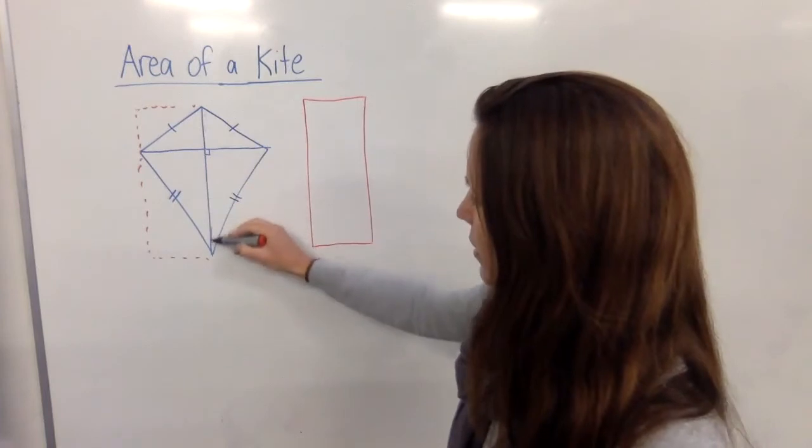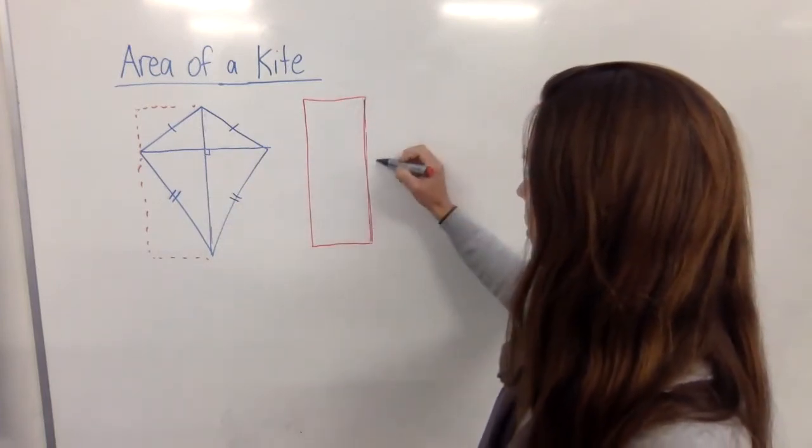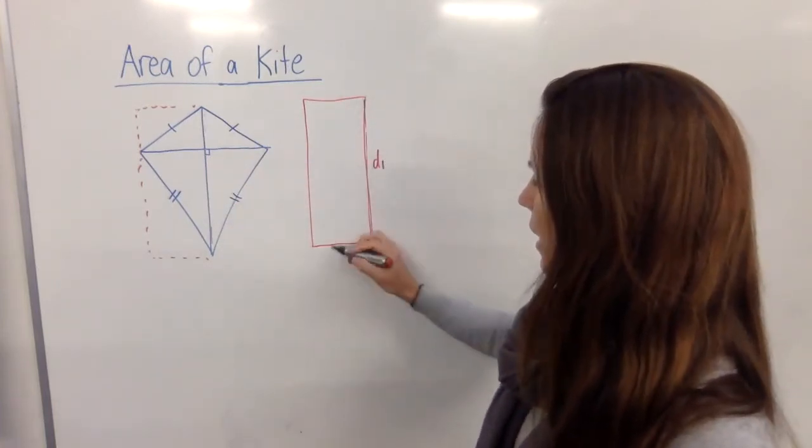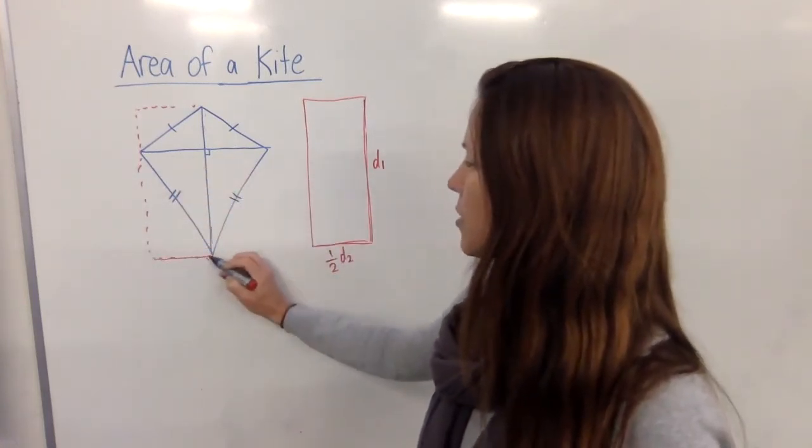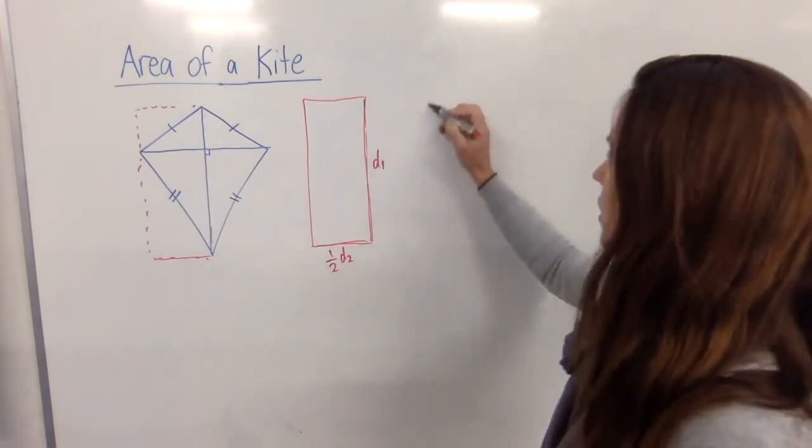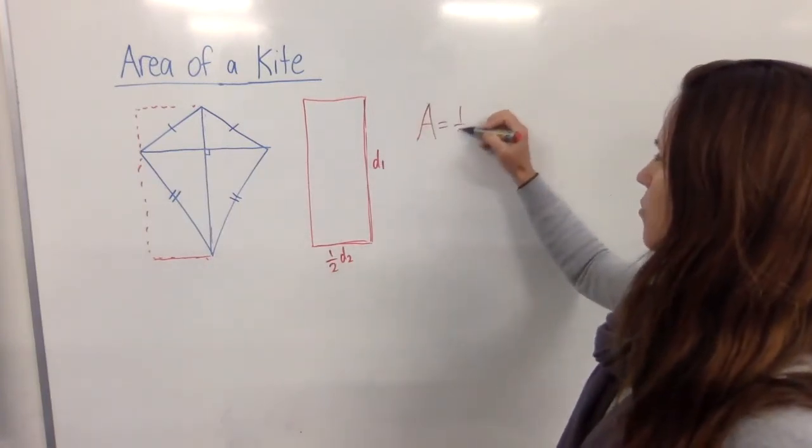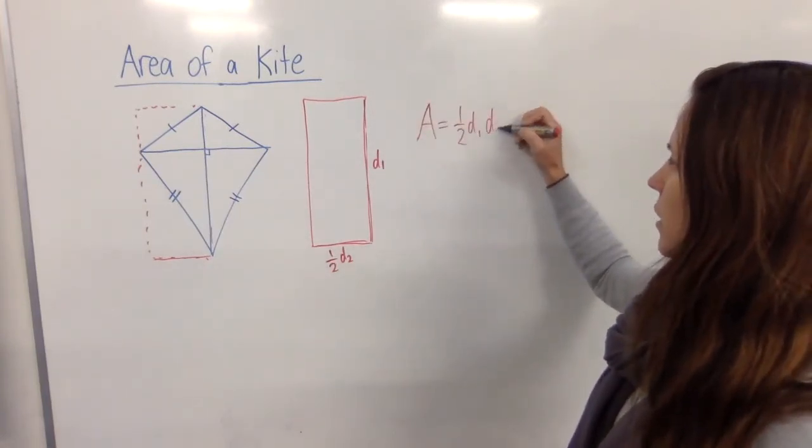So we have one diagonal all the way down here. We could call this diagonal one. And we want half of diagonal two across here because this equates to just this much, just half of the diagonal. So the area for this one is half diagonal one times diagonal two.